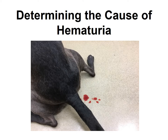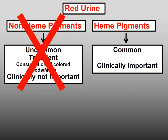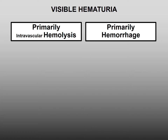This is not a discussion on microscopic hematuria, but the diagnostic approach is identical. Red urine results from non-heme pigments or heme pigments. Red urine due to non-heme pigments is associated with ingestion of red foods or red medications. Non-heme pigments causing the urine to be red is often transient and clinically not important. Therefore, I will eliminate this category as a cause for disease.